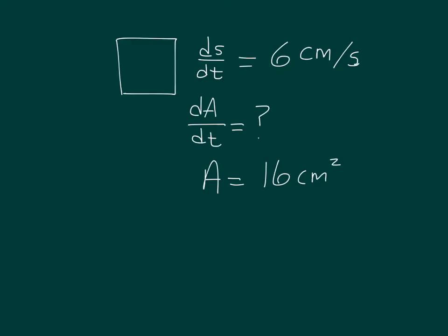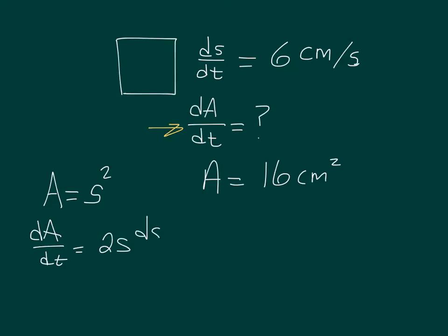Since I'm looking for the change in area, the area of a square is side times side, or side squared. If I differentiate both sides with respect to time, I get dA/dt = 2s(ds/dt).